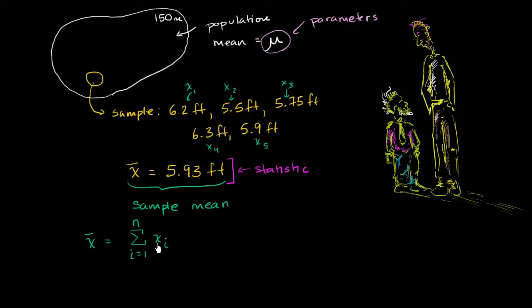So this is literally saying, this is equal to x sub 1 plus x sub 2 plus x sub 3, all the way to the nth one. Once again, in this case we only had 5. Now, are we done? Is this what the sample mean is? Well, no, we aren't done. We don't just add up all of the data points.